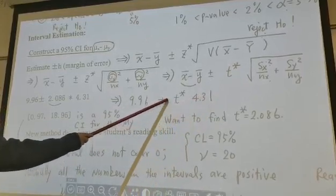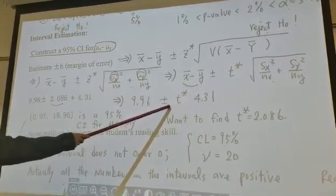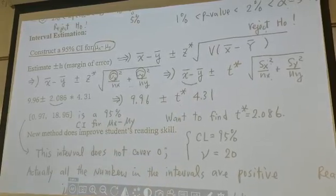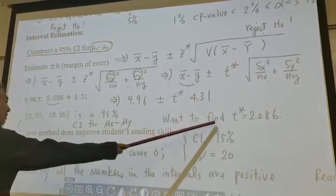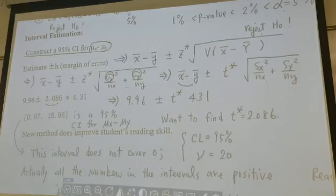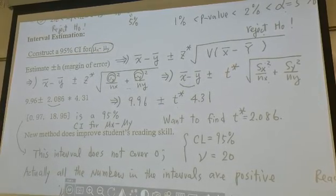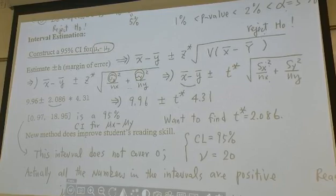So the only job left undone is we need to find t-star. What is the critical t-value? We want to find t-star. And how can we find t-star? We're going to use the t-table.